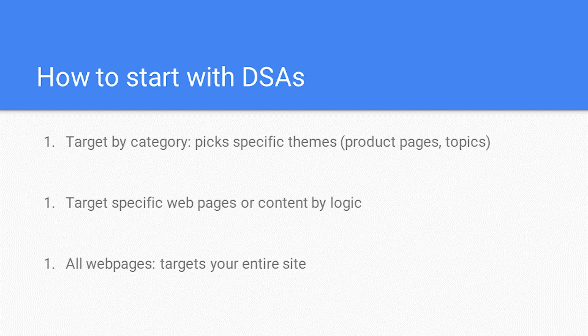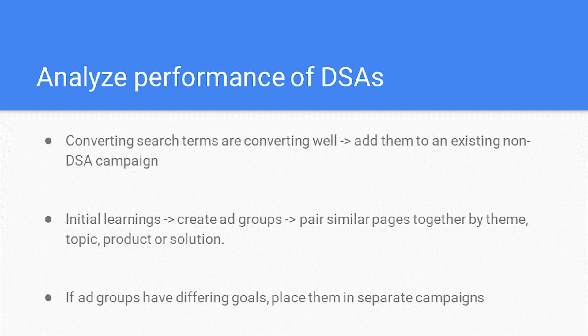Now that we've created our dynamic search ads campaigns, how do we analyze the performance? Go into your search term report, and if search terms are converting well, ensure that these keywords get bid on all the time by adding them to an existing non-DSA campaign. Choosing to leave the term in the DSA campaign is fine and will still drive results, but the regular campaign can help control ad copy and your bidding. After you have those initial learnings, create ad groups that put similar pages together by theme, topic, product, or solution. Your analysis can go deeper into what's converting best, and you can eventually pause underperforming ad groups. If the ad groups have differing goals, make sure to place them in separate campaigns.